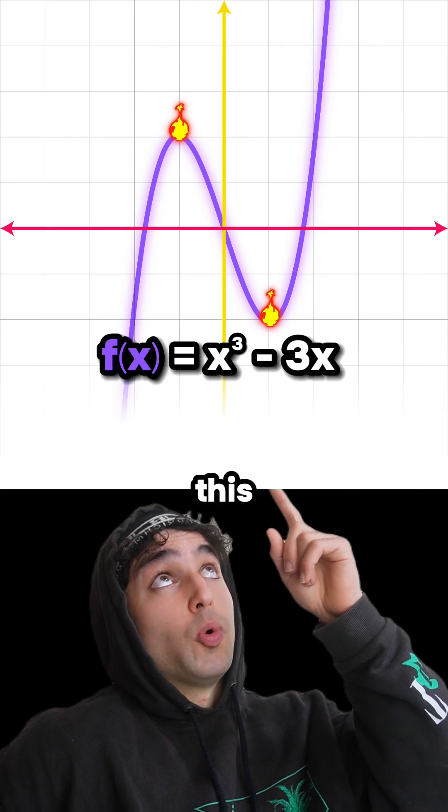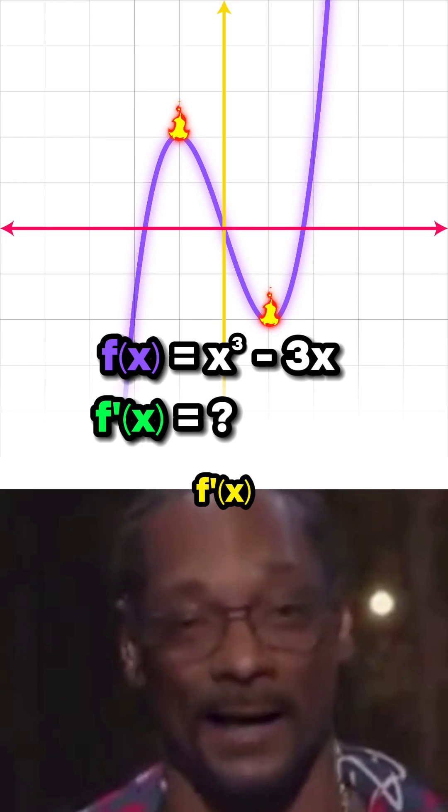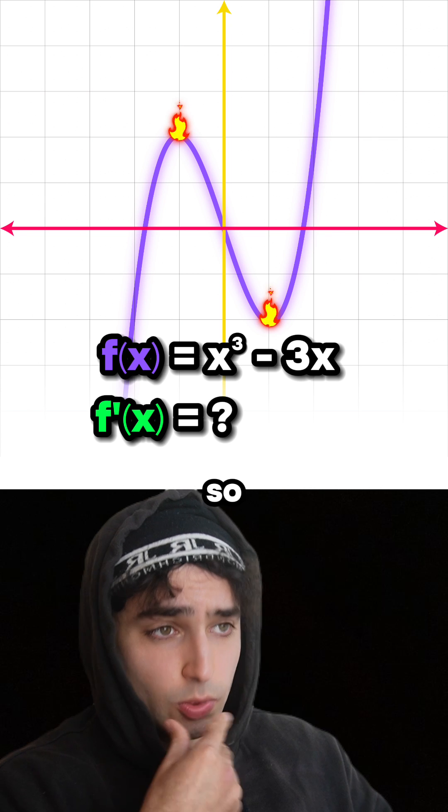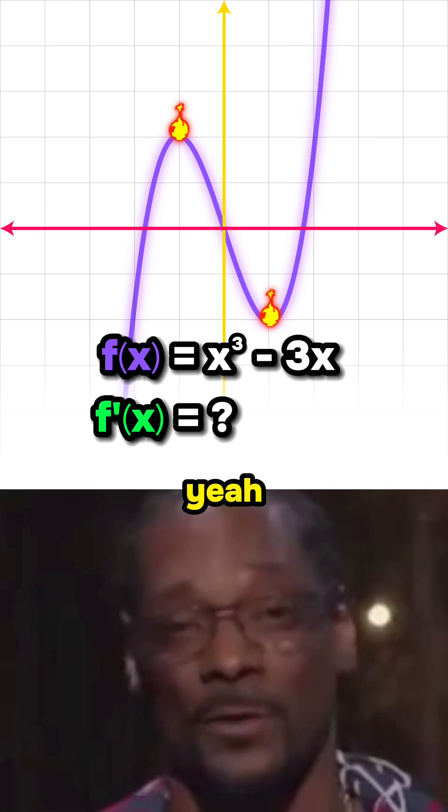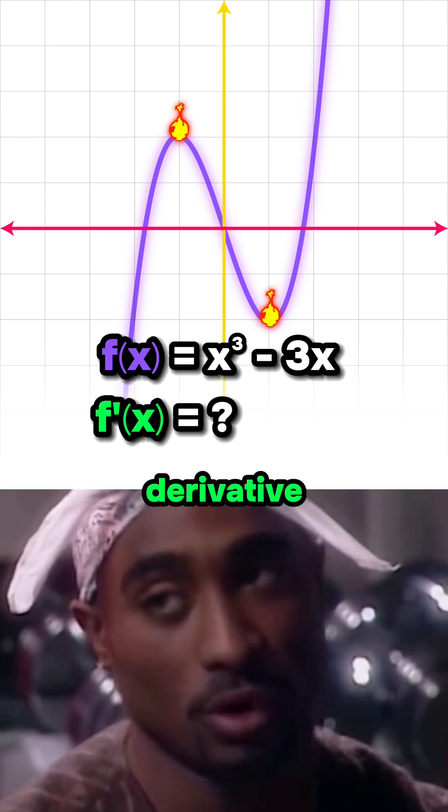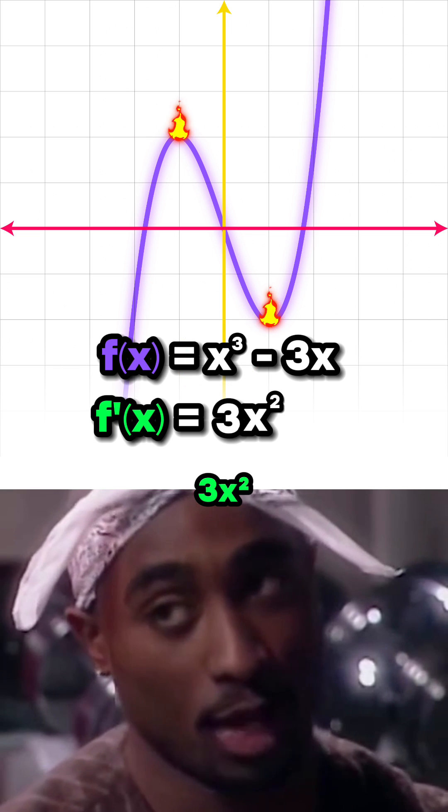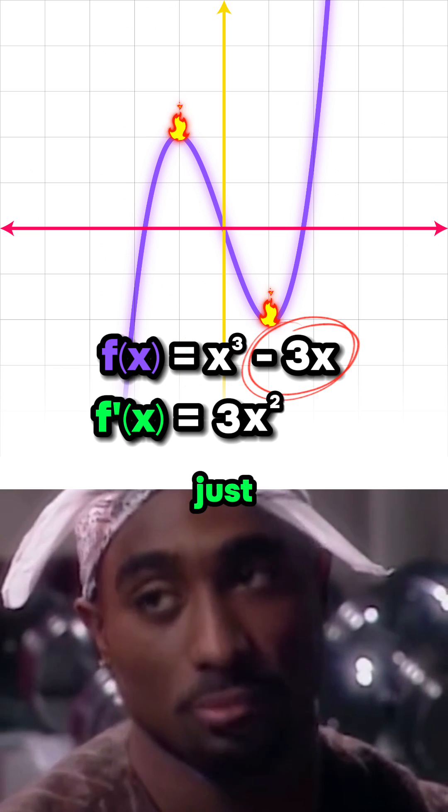How would you find the stationary points of this one? Step one is finding f prime of x, the derivative of your function. So we do that with the power rule. Use the power rule for both these terms. The derivative of x cubed is 3x squared, and then the derivative of minus 3x is just minus 3.